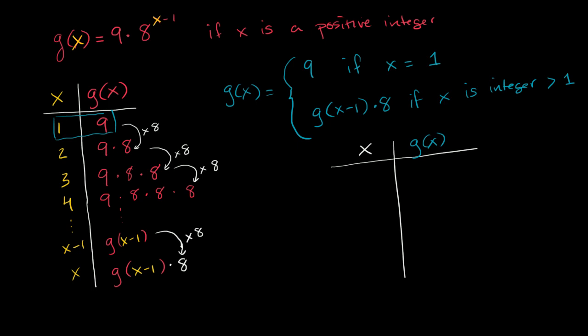So let's see, when x is equal to 1, g of 1, well if x equals 1, it's equal to 9. So that was pretty straightforward.